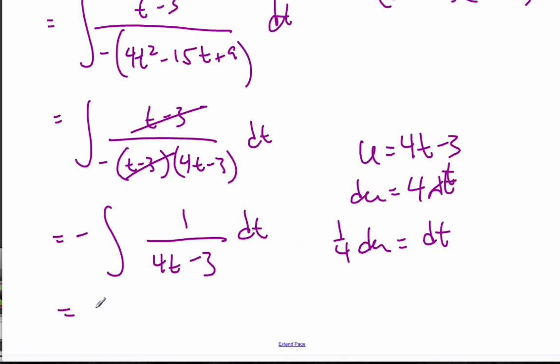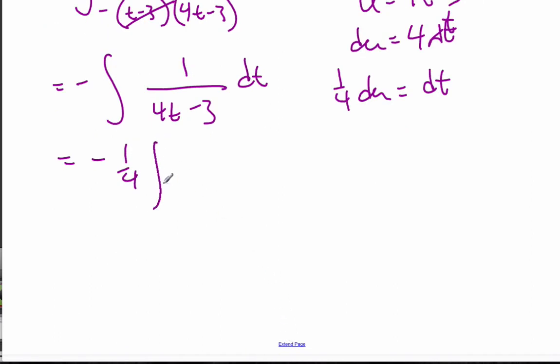And so it's equal to negative 1 quarter, 1 over u du. Which is, this is the integral, this is ln u, which is simply 4t minus 3 plus c.